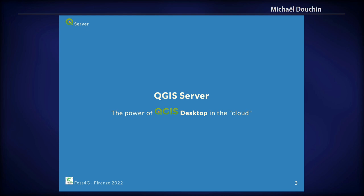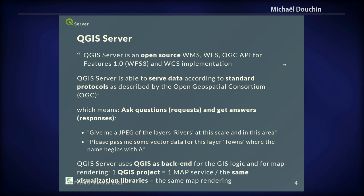QGIS Server is mainly the power of QGIS Desktop but in the cloud. A server is just a computer somewhere and you can ask it questions and it will return answers. For example, you can ask for a JPEG of the layers rendered at certain scales and in a specific area, or you can request vector data for the layer 'towns' with the name beginning with A. There are Open Geospatial Consortium standard protocols, and QGIS Server supports standard ways to make these requests.